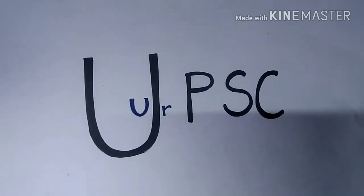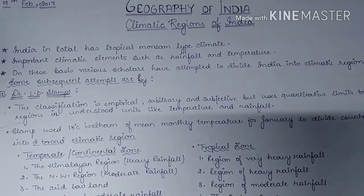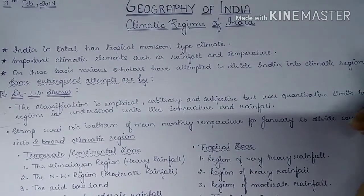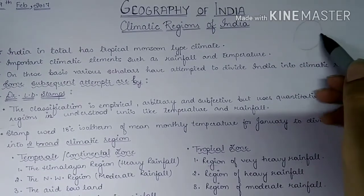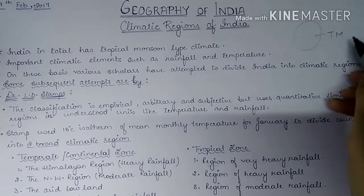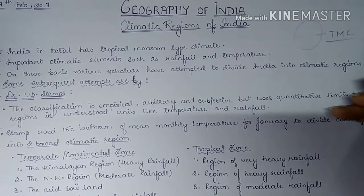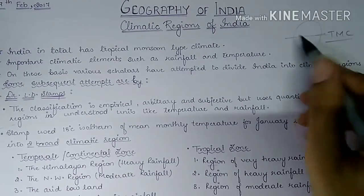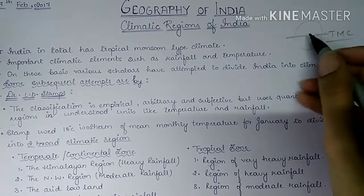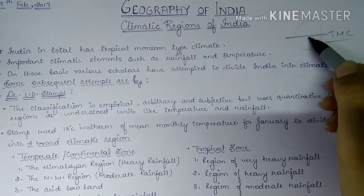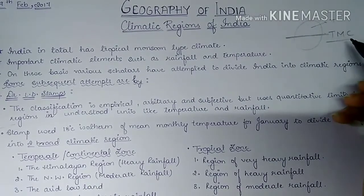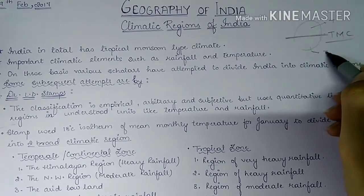Welcome back. Today we are going to start with the last topic in climate of India — that is climatic regions of India. Looking at the whole climate of India, we can see that our climate is tropical monsoon type. If we divide it into broad categories, there are two types: one north of the Tropic of Cancer and another south of it. In the north we have temperate climate, and in the south we have tropical climate.